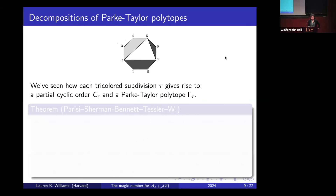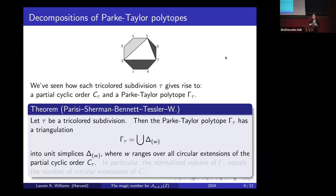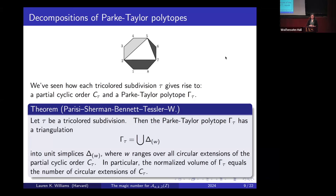Every tricolored subdivision tau gives rise to two things: a partial cyclic order and a polytope. A second theorem we prove is that the Parke-Taylor polytope associated to a tricolored subdivision has a triangulation into unit simplices indexed by the circular extensions of the corresponding partial order. In particular, the normalized volume of this polytope equals the number of circular extensions of the cyclic order.